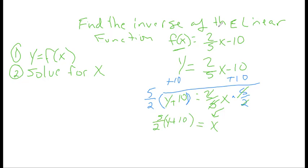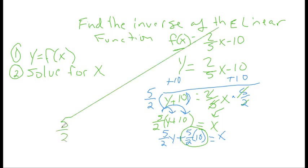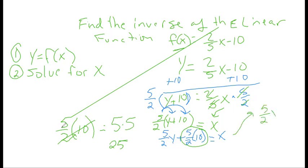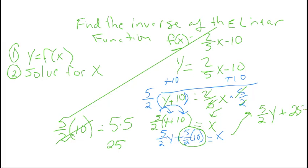A lot of people would consider that almost done, except we need to clean it up. I'm going to distribute that five over two into the parentheses. So I'm going to have five over two times y plus five over two times 10 equals x. The last part to clean up: five over two times 10 — the two goes into 10 five times, making this five times five, which is 25. So I'm going to restate this as five over two y plus 25 equals x.